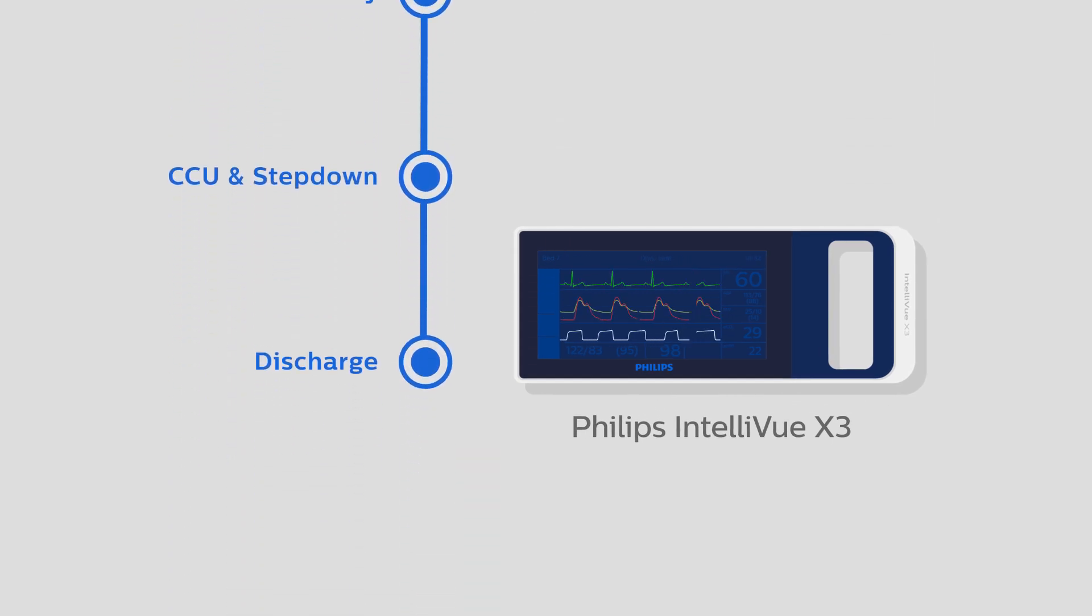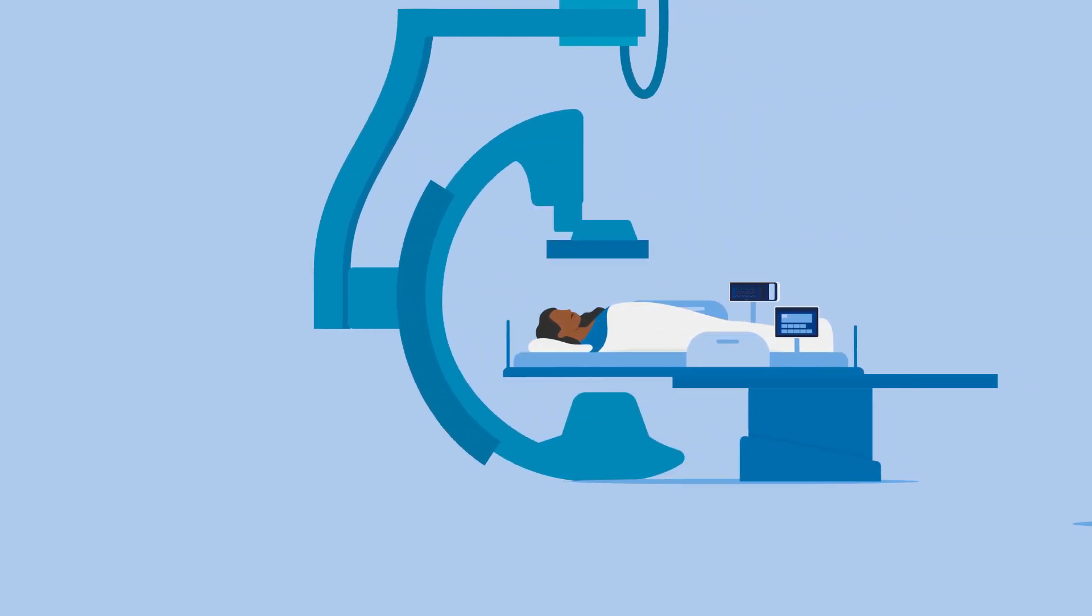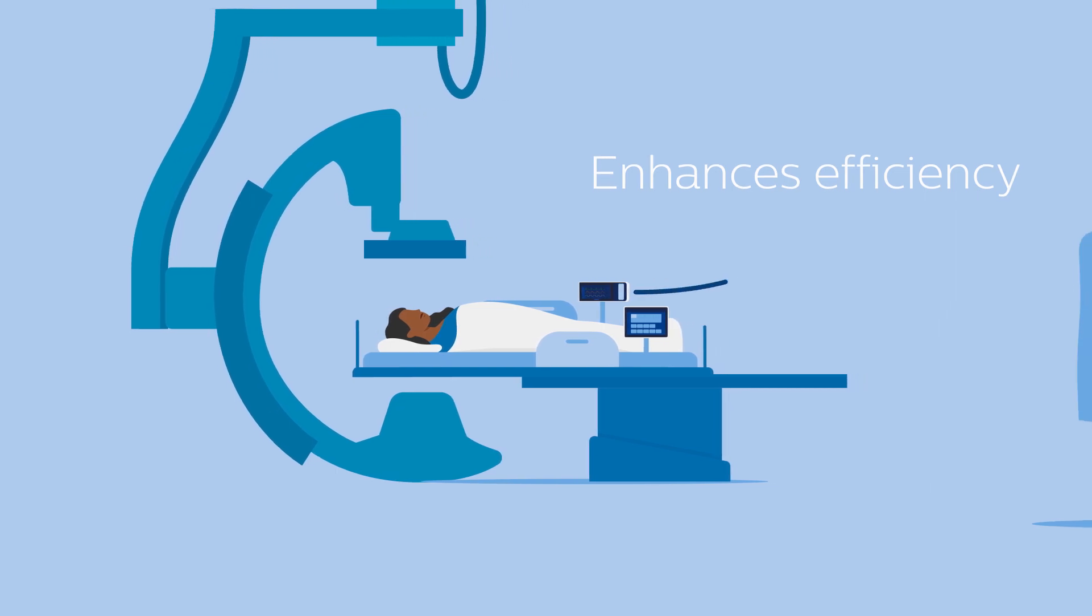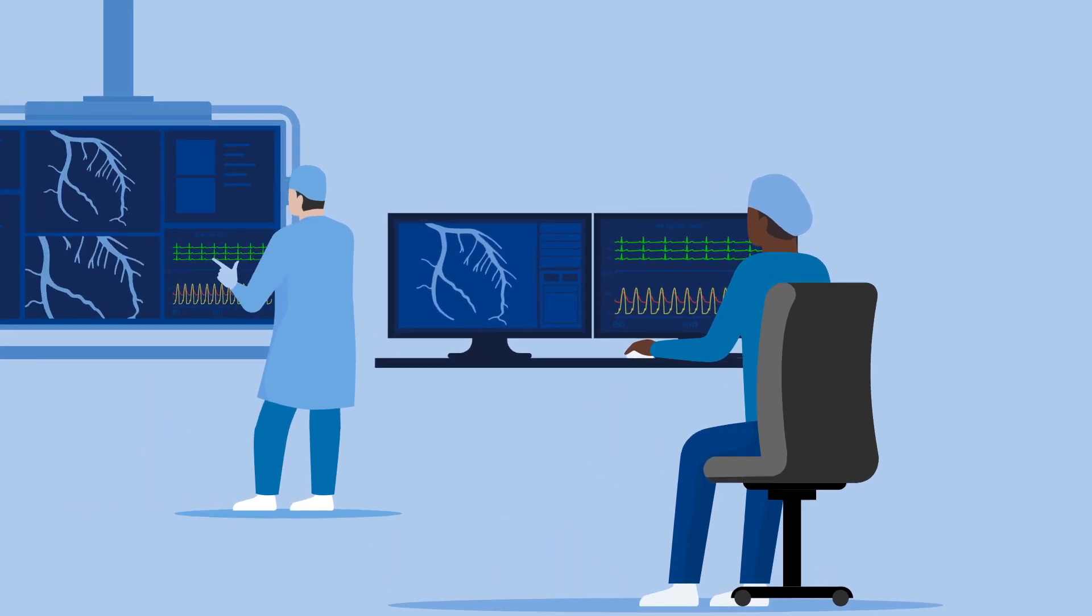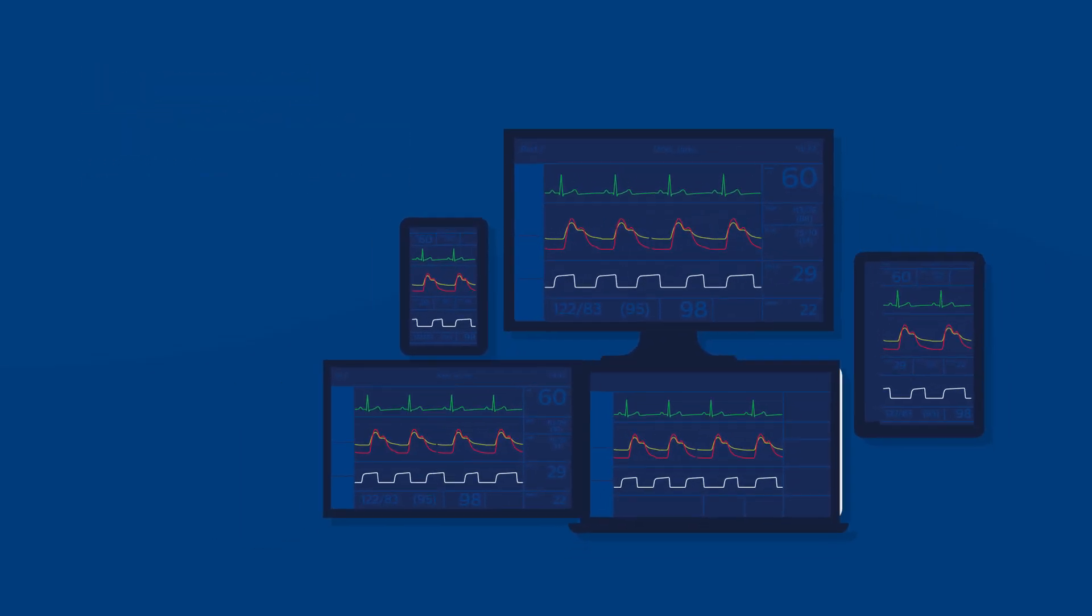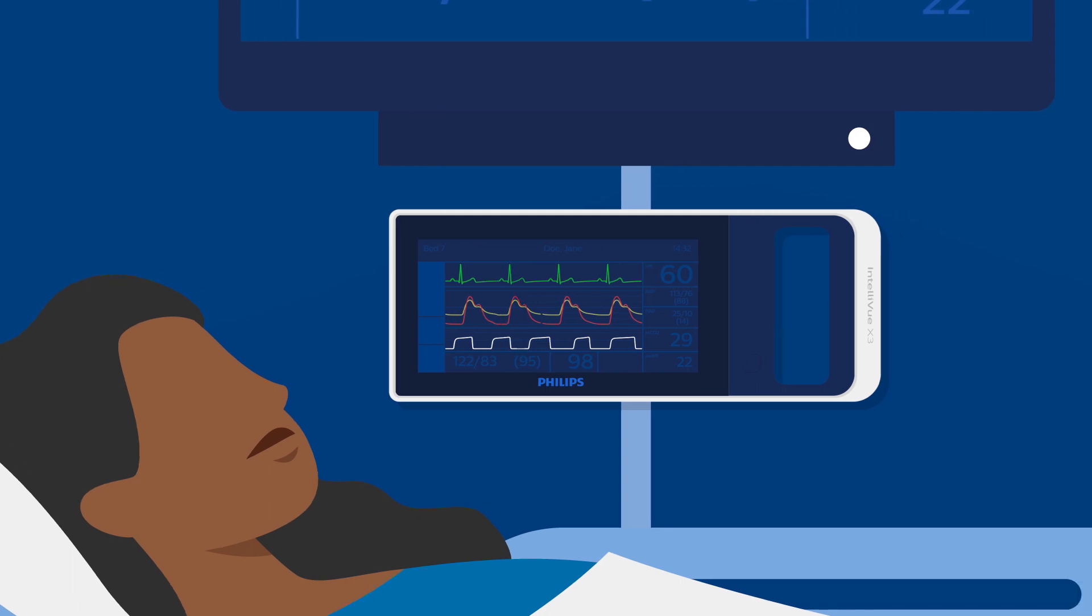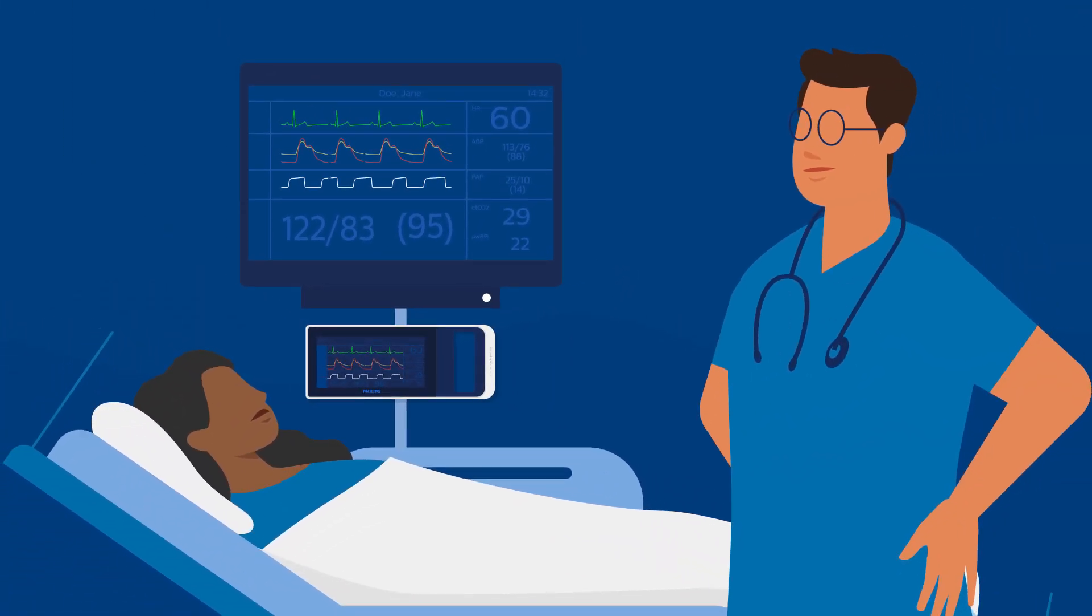The Philips Intelliview X3 provides continuous patient monitoring with a portable monitor that accompanies the patient to allow for continuous monitoring and support confident, timely clinical decision-making. It enhances workflow efficiency by removing the need to re-cable patients and integrating smoothly into the cath lab workflow, helping to reduce procedural time and support optimal use of resources. And it helps standardize equipment with one-time cabling at the onset of care that supports fast, consistent treatment and reduces unnecessary tasks, ultimately allowing the clinician to spend more time with the patient.